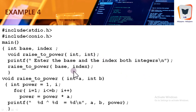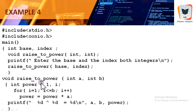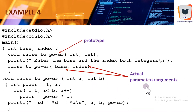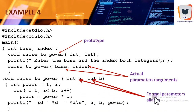Every element of the prototype must match the function definition. The function header is: void rise_to_power(int a, int b). The parameters a and b are called formal parameters, dummy parameters, or aliases — a is an alias for base and b is an alias for index. At the calling stage, only variable names are passed without specifying their types, just like a mathematical function f(x, y).